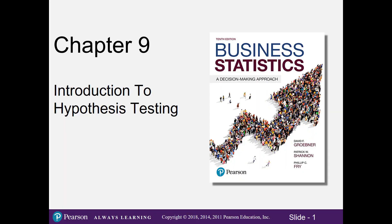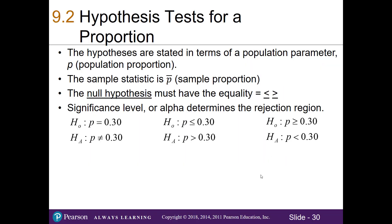Chapter 9, Introduction to Hypothesis Testing. In this video we'll be covering hypothesis tests for a proportion. The hypotheses are stated in terms of a population parameter, which is our lowercase p, the population proportion. Our sample statistic that we're going to use to understand the population is our p bar, or the sample proportion. Note that the null hypothesis must have the equality symbol, where it's equals, less than or equal to, or greater than or equal to, just like it was in the hypothesis test for a mean.